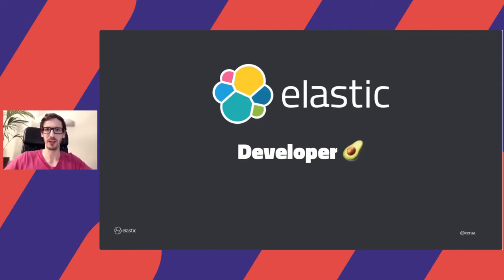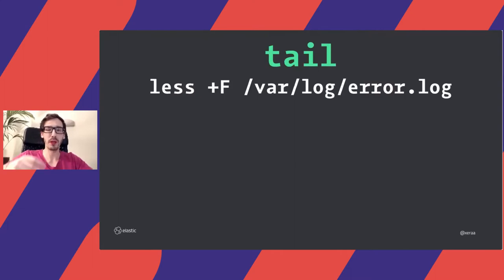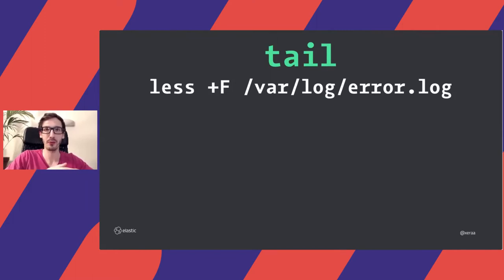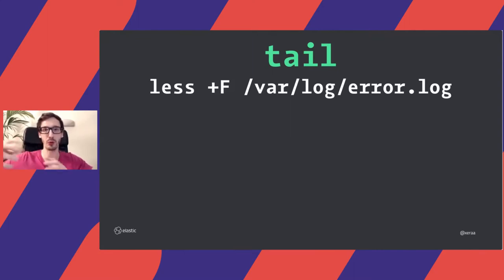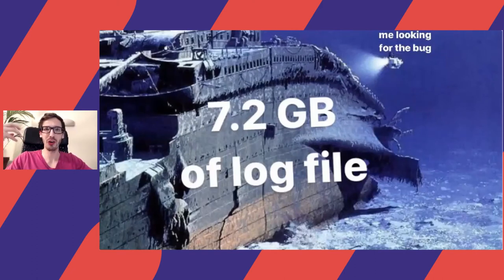Starting with log management, probably the first thing a lot of people were using was something like `tail -f`, or maybe the more advanced `less +F`, so you could still follow the logs as they were flowing in and break out of that follow mode to move up and down, or even search in that file. With `tail` you'd always need to move out, switch to another program to search, then head back — so `less` is the slightly more advanced version of following that file.